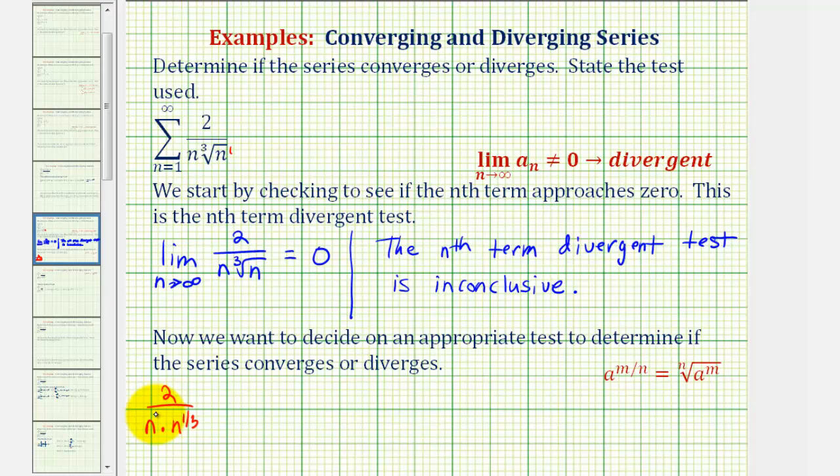And n is the same as n to the first, so we can write a sub n as 2 divided by n to the four-thirds power. This means we can rewrite the given series as the sum from n equals 1 to infinity of 2 divided by n to the four-thirds. In this form, we should recognize that the series does resemble the p-series, so now we'll apply the p-series test.